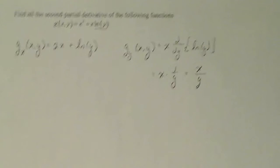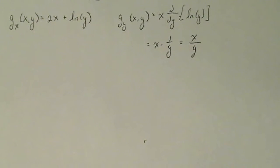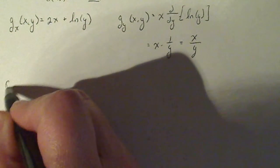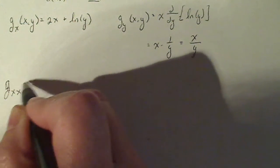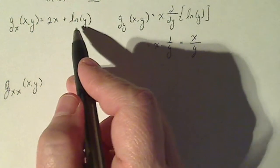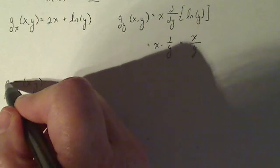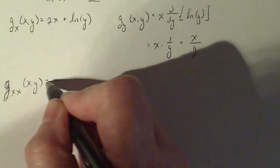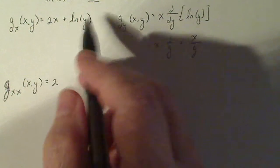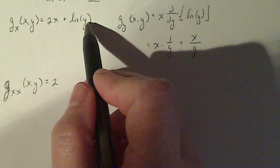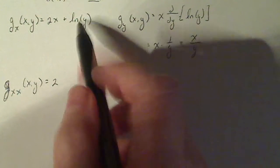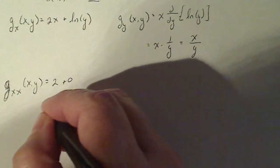Let's keep going. Let's do g sub xx. That means I'm going to take the derivative of g sub x with respect to x again. The derivative with respect to x of 2x is just 2. The derivative with respect to x of y — since y is a constant when taking it with respect to x — is 0. So g sub xx is 2.